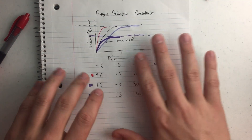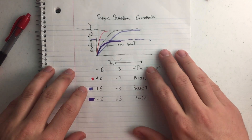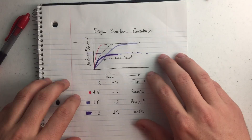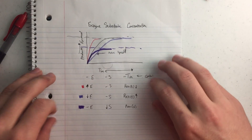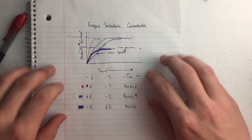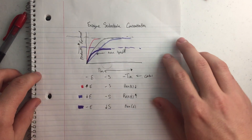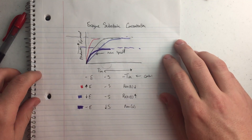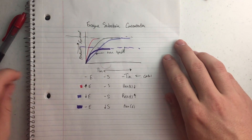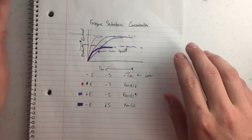So just some things to think about as far as reaction rates, and when you change the concentration of enzyme or substrate in a reaction. I hope that was helpful.